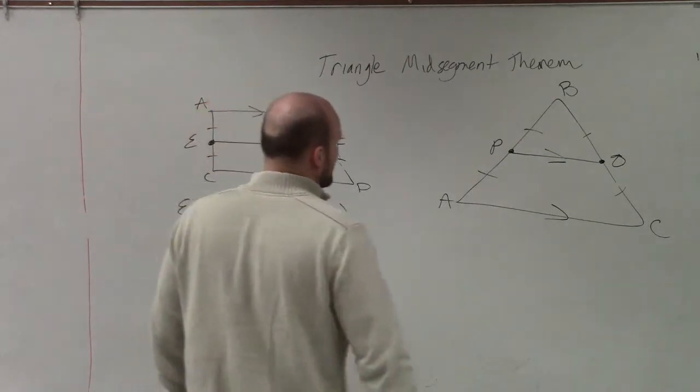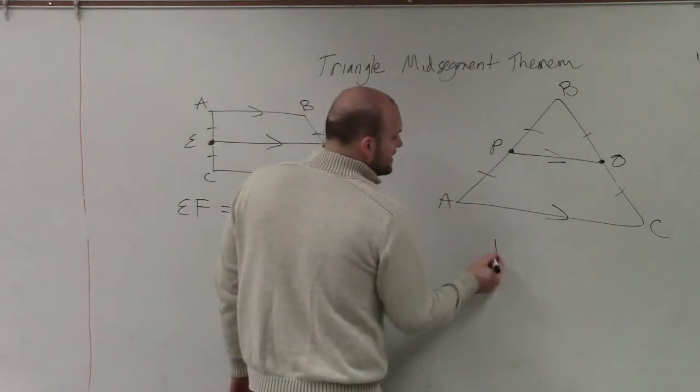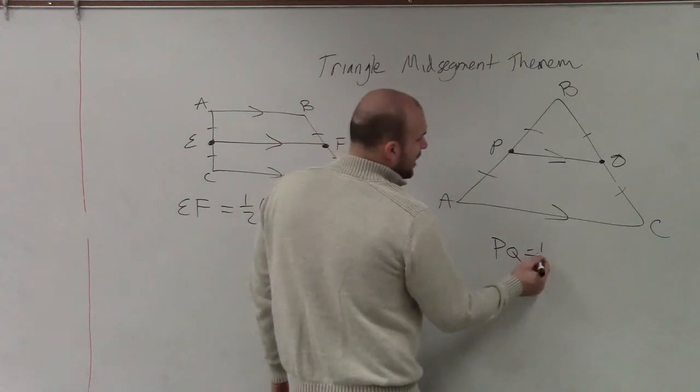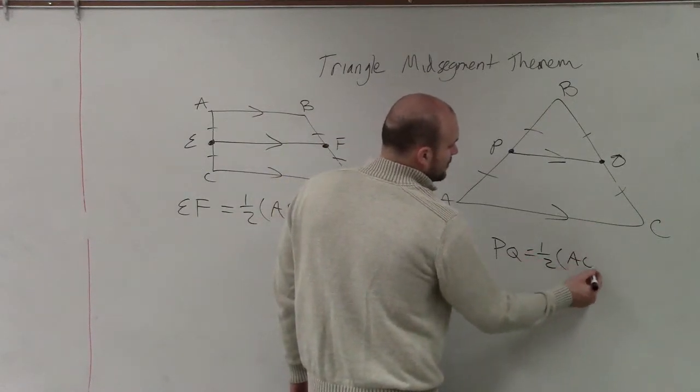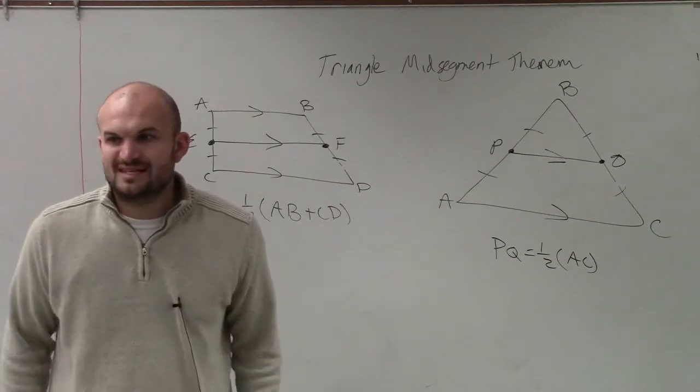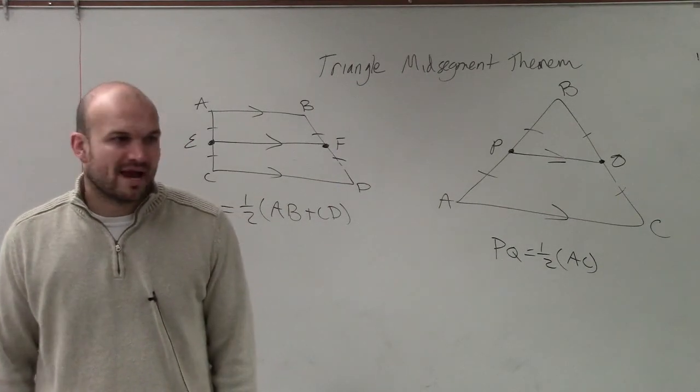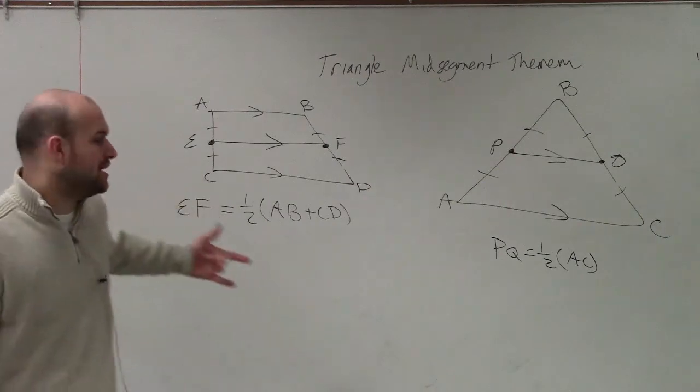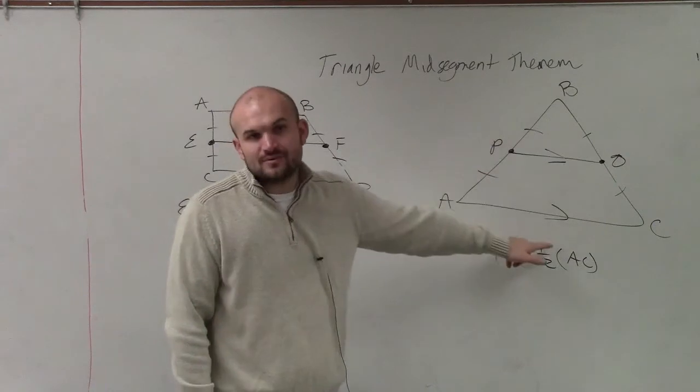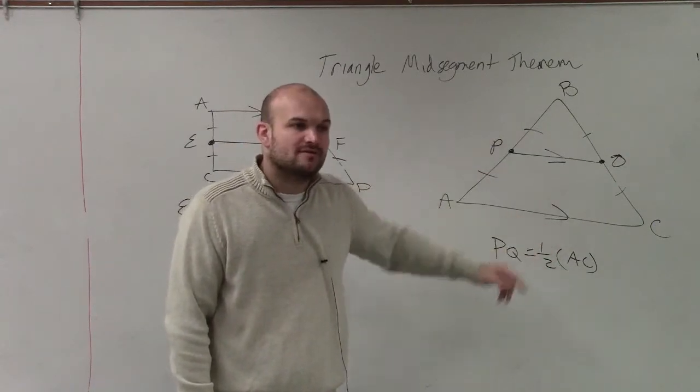And then we have parallel lines. And then also, if I wanted to find the value of PQ or the length of PQ, all it is is equal to one-half times AC. And that's it, one-half times AC. So while the trapezoid, you had to add the two bases, here you just find what it's parallel to and multiply by one-half.